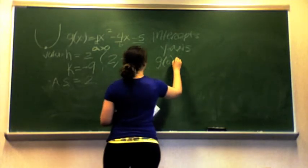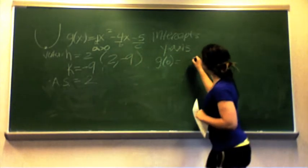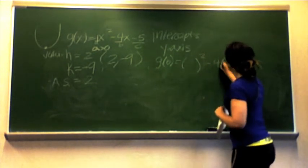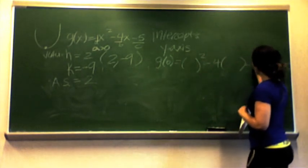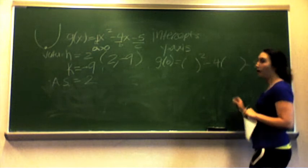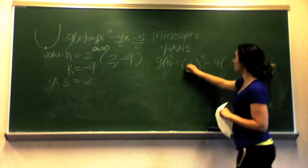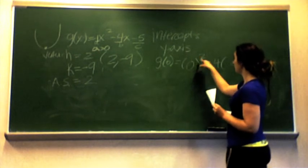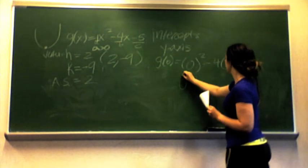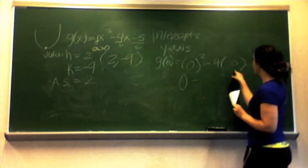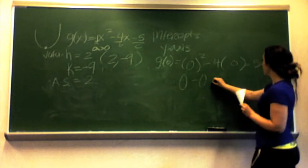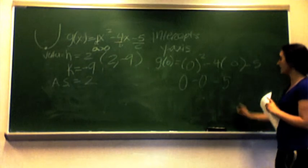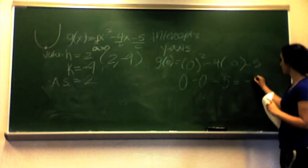Now we're going to find the y-intercept by plugging in 0 for x. So 0 squared is 0, minus 4 times 0 is always 0, and then minus 5. So our y-intercept is going to be equal to negative 5.